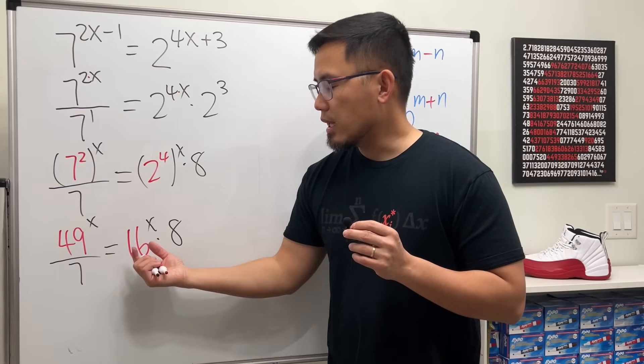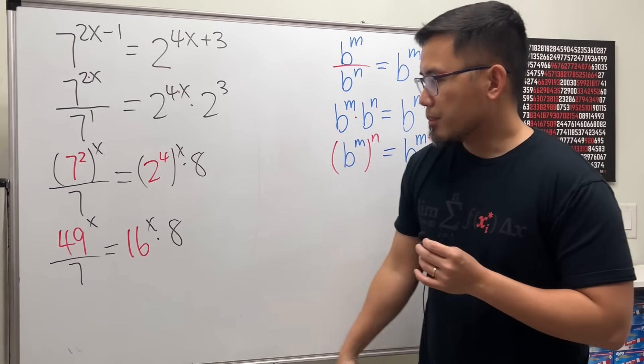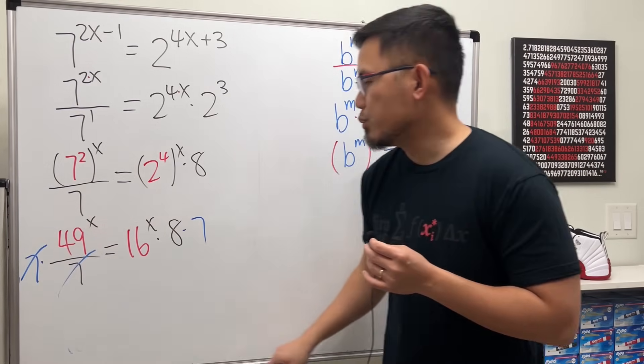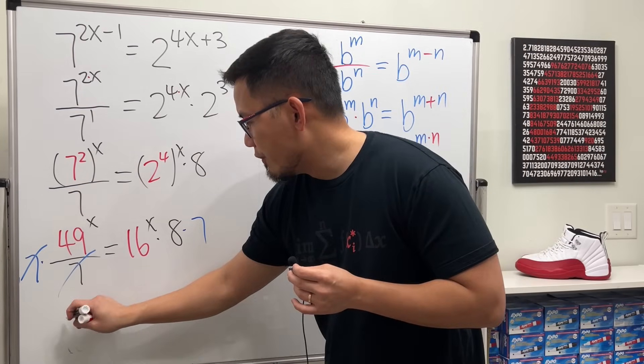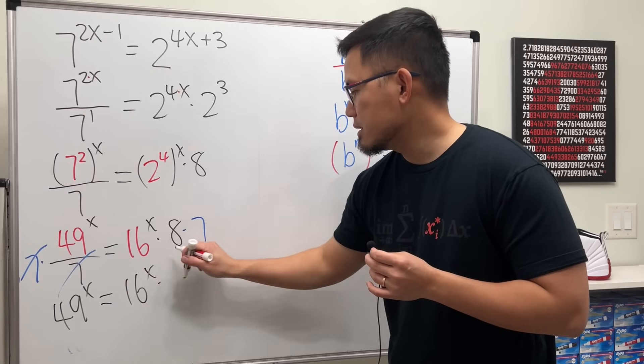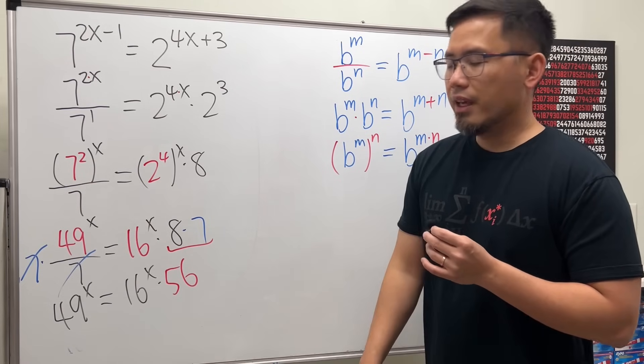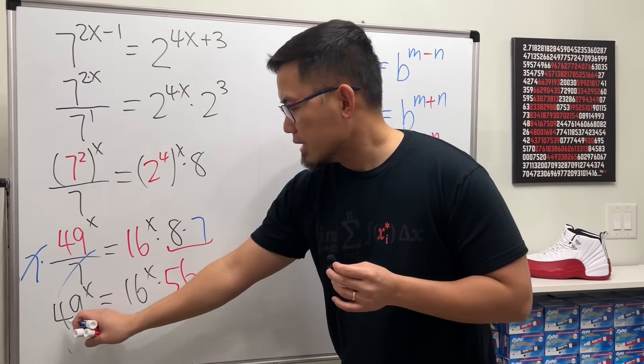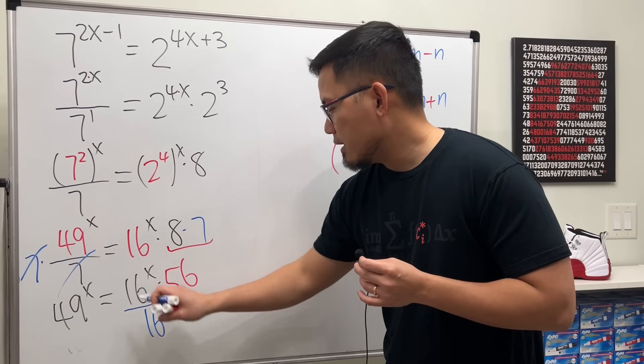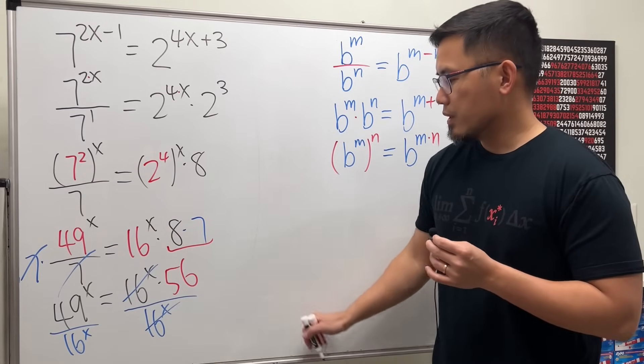Notice we have x on both sides. We want to put them together on one side, and then just kick the number to the other side. Perhaps I would like to just multiply both sides by 7 first, so we don't see any more fractions. And then we will get 49 to the x power equals 16x times 7 times 8, which is 56. Next, I want to bring this to the other side, and that's a multiplication. So we have to undo that by divide. Divided by 16x on both sides. So this and that cancel.